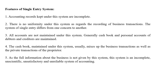All accounts are not maintained by this system. Generally, only the cash book and personal accounts of debtors and creditors are maintained. The cash book maintained under this system usually mixes up business transactions as well as private transactions of the proprietor — both business and personal transactions are included.